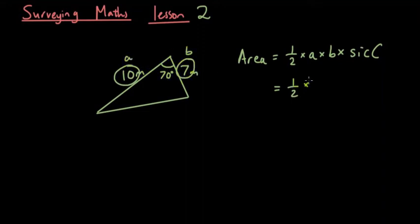You just simply put the two lengths you're given in the formula. It doesn't matter if you say 7 is a, 10 is b, or 10 is a, 7 is b. They all mean the same thing, so you just go 10 times 7 times sine C.